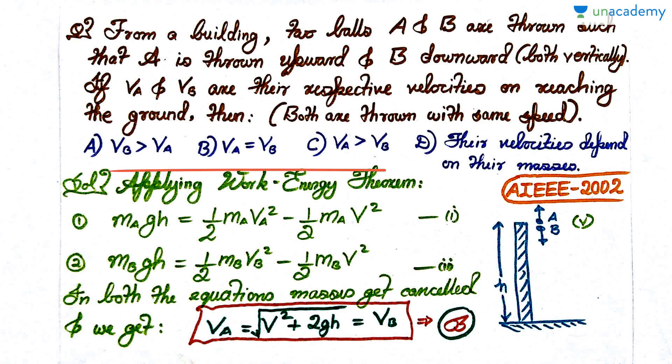VA and VB are the respective velocities on reaching the ground. Here by velocity they actually mean speed because there's no inequality in vectors, only in scalars. The magnitude of vectors can be compared. Both are thrown with the same speed. The options are: VB greater than VA, VA equal to VB, VA greater than VB, and their velocities depend on their masses.